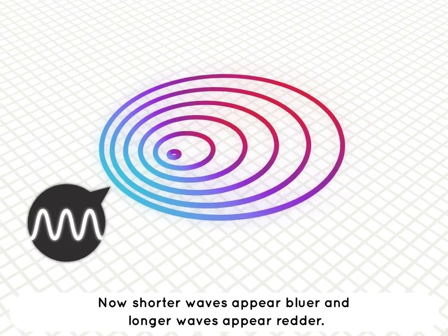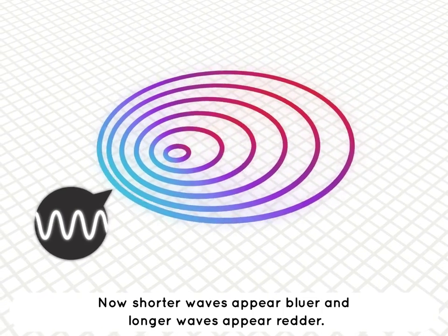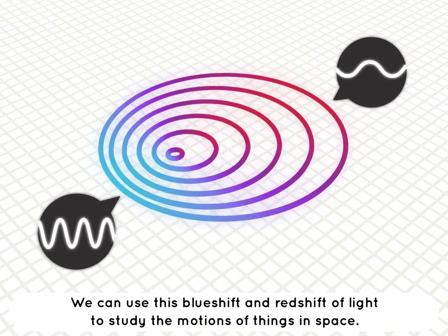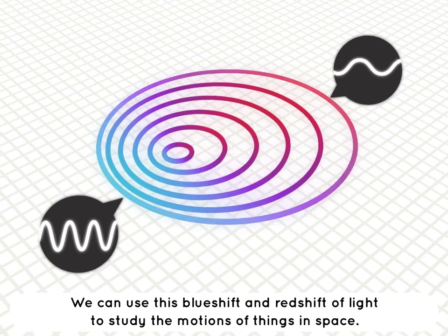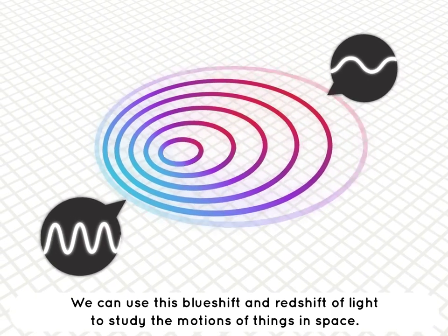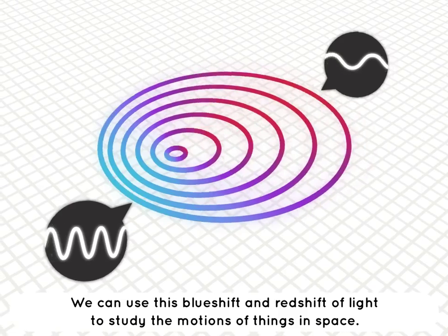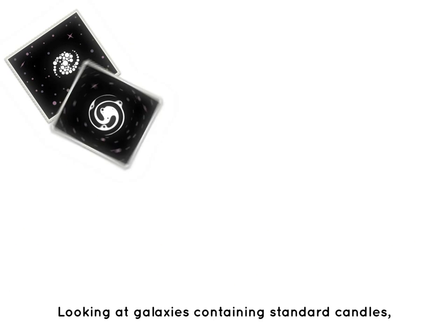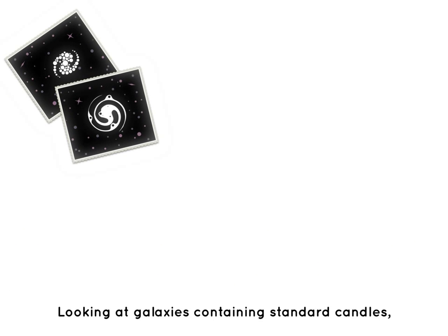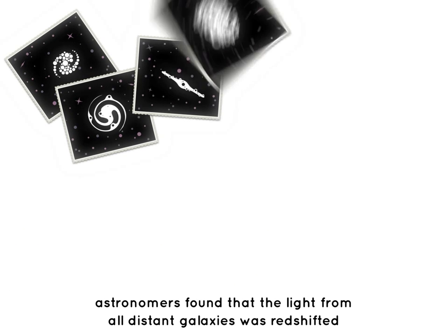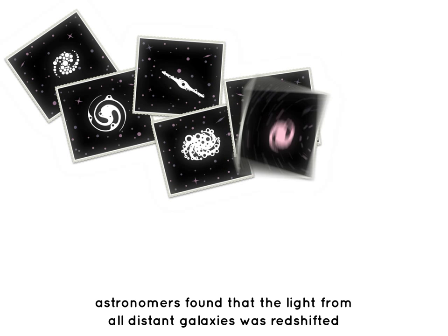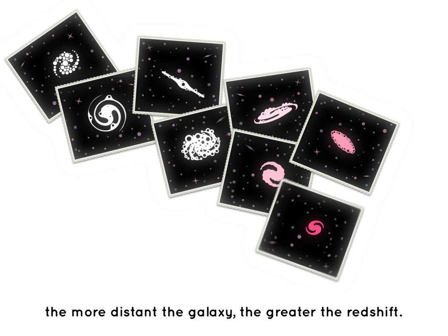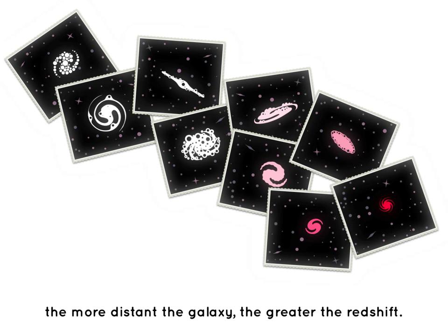Shorter waves appear bluer and longer waves appear redder. We can use this blueshift and redshift of light to study the motions of things in space. Looking at galaxies containing standard candles, astronomers found that the light from all distant galaxies was redshifted — the more distant the galaxy, the greater the redshift.